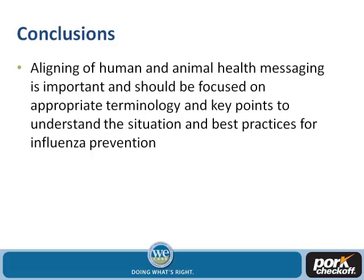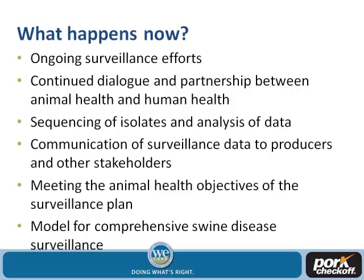Aligning human and animal health messaging is important and should focus on appropriate terminology and key points for the audience — communicating to understand the situation and best practices for prevention. We're still moving forward and working on communication messages. Ongoing surveillance efforts continue on both the animal health and public health sides, with continued dialogue and partnership, increased sequencing of isolates, and more analysis of data to understand regional differences.